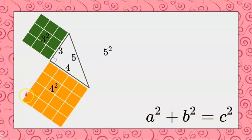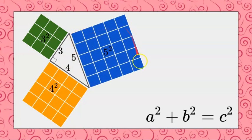Now, visualize this. We have a 4 by 4 square with an area of 16, which is 4 squared. And on this side, our hypotenuse side, we're going to do a 5 by 5 square, which is 25 squares, or 5 squared.